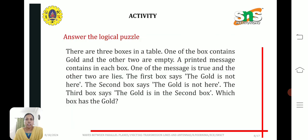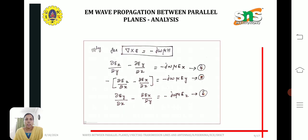This is an activity. Next, for del cross e minus j omega mu h, we apply the same curl equation and we get equations for relation between ex, ey and ez.